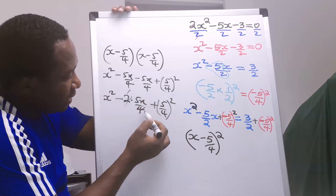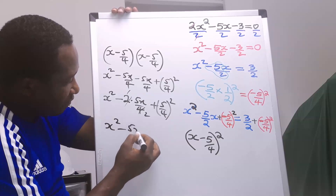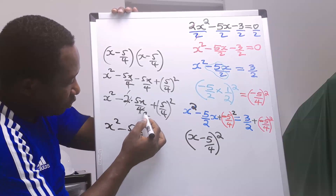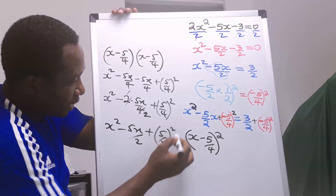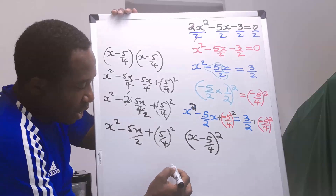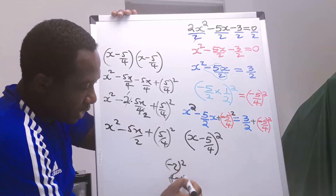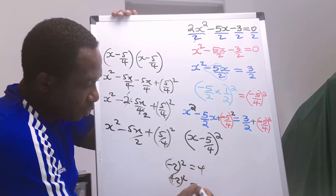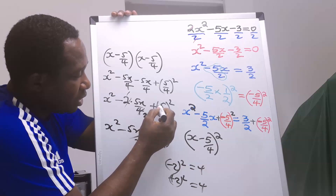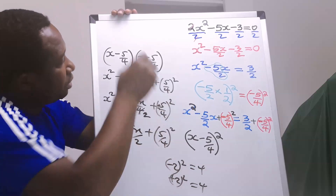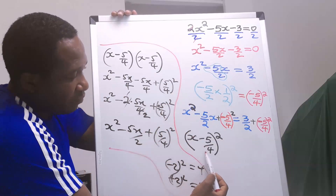Combining terms 1 and 2, we have x squared minus 5x over 2, plus 5 over 4, all squared. Remember, when you have minus 2 squared and plus 2 squared, both give you 4. In mathematics, inside the bracket, we can have plus or minus. You can see that this actually gave us this back.